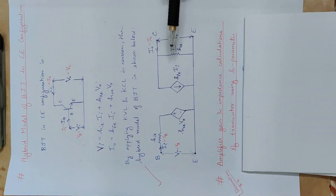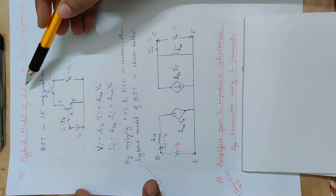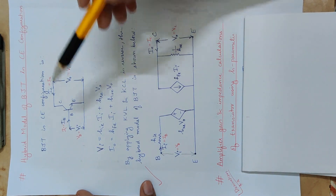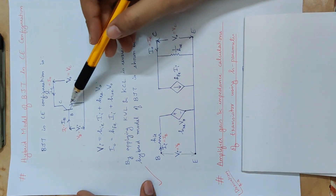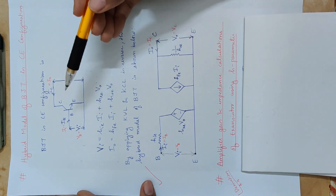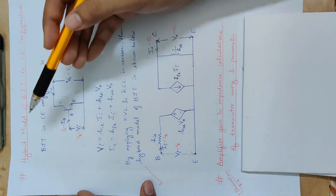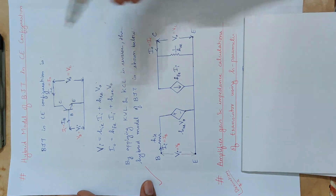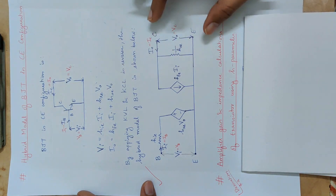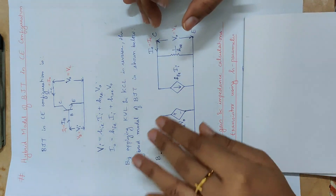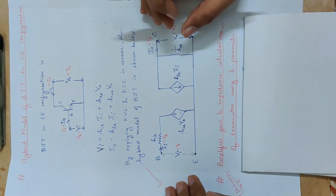In the last video we already discussed the hybrid model of BJT in common emitter configuration. That is why we call this transistor has h-parameters, which is called the hybrid model equivalent. Now we have two parts: one input and one output.